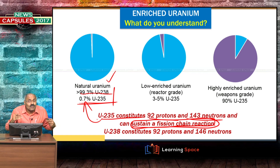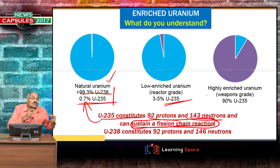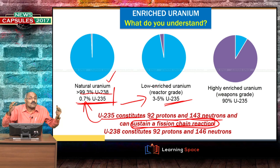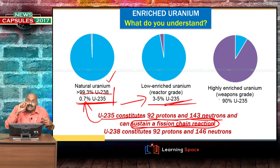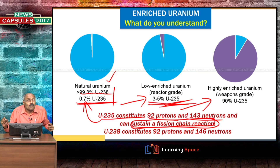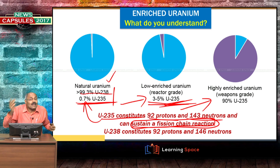Enriched uranium means the component of U235 is increased from its natural 0.7%. Enriched uranium can be classified into low enriched uranium of 3 to 5% U235, which is sufficient to produce nuclear power. But enrichment of up to 90% is required to make an atom bomb. So for nuclear power, 3 to 5% enrichment is sufficient, while 90% enrichment is needed for weapons.